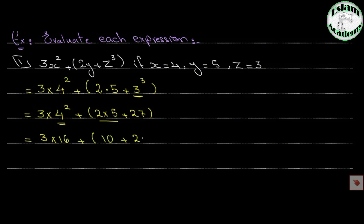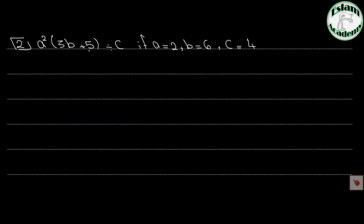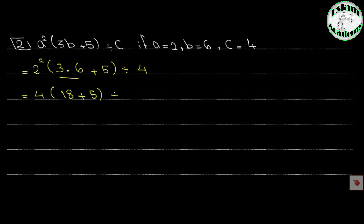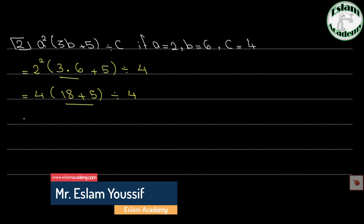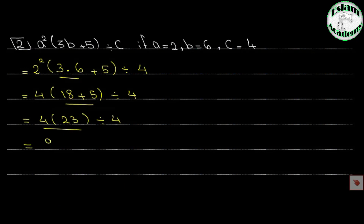Problem 2: a squared times (3b plus 5) divided by c, where a equals 2, b equals 6, c equals 4. By substitution: 2 to the power 2, times (3 times 6 plus 5), divided by 4. Solve inside the bracket: 3 times 6 equals 18, plus 5 equals 23. Now 4 times 23 equals 92, divided by 4, so the answer is 23.